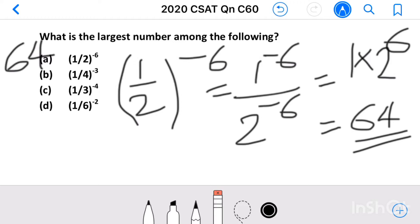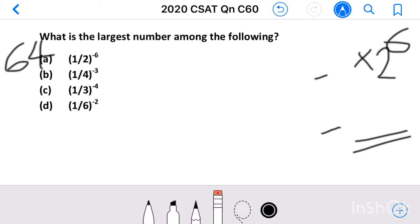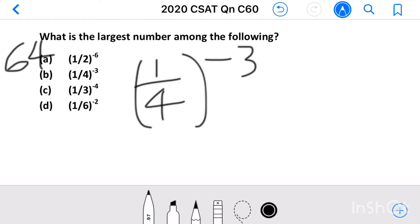Same way we can find the value of second number: 1 by 4 raised to minus 3. This we can write as 4 cube. 4 cube equals 4 into 4 into 4, that is 64. Second term also equals 64.